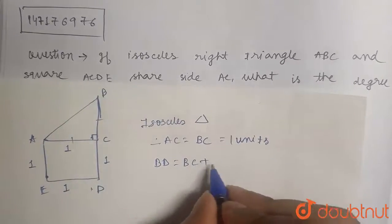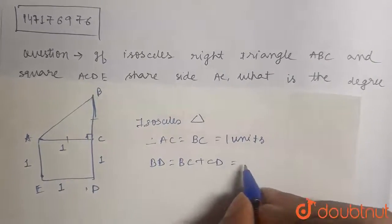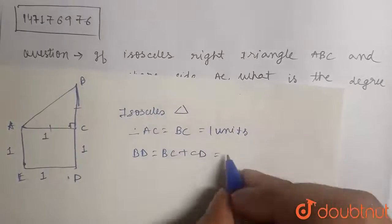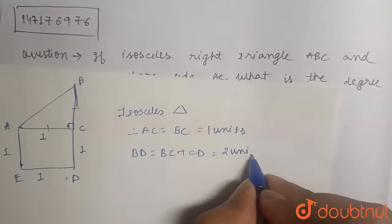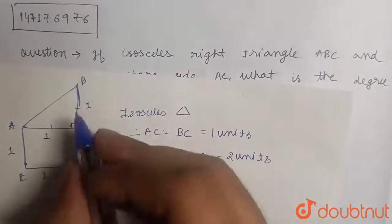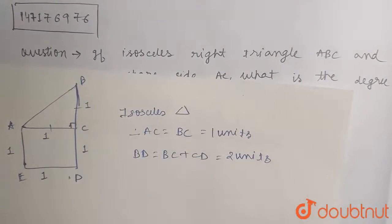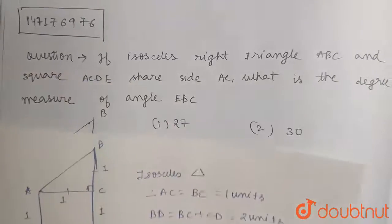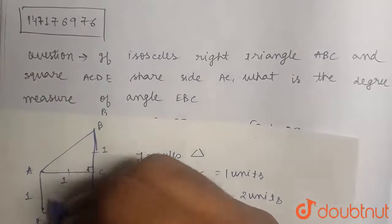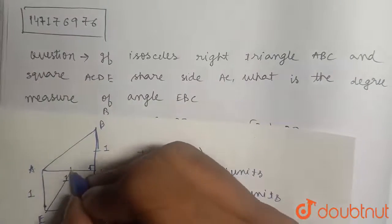BD will be BC plus CD. That will be how much? Both are one unit, you can see in the diagram, so it will be two units. This will be also one, so total BD will be one plus one, two units.